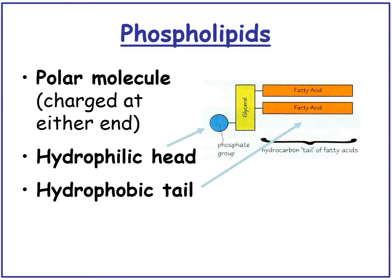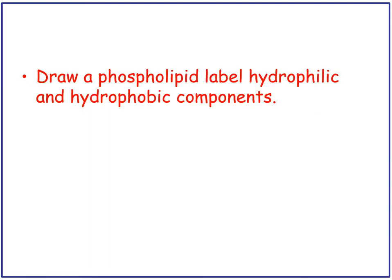To recap: phospholipids have a hydrophilic, water-loving head and two hydrophobic, water-hating fatty acid tails that don't like water. Phospholipids are a polar molecule - they are charged at either end. The phosphate group has a positive charge, whereas the fatty acid group has a negative charge. Pause the video and draw a phospholipid, labelling the hydrophilic and hydrophobic components.